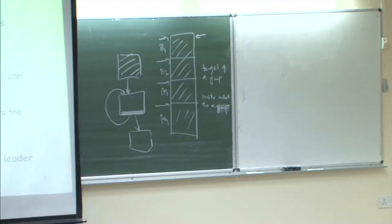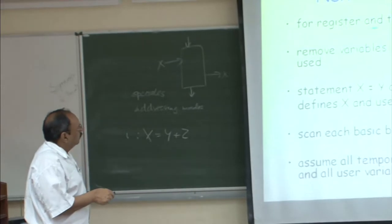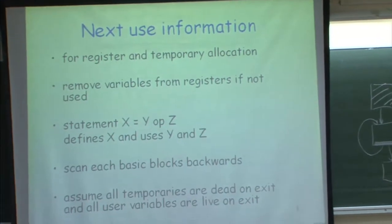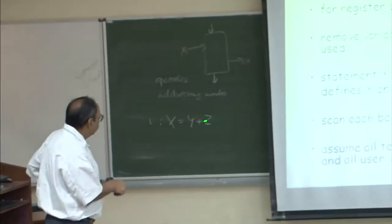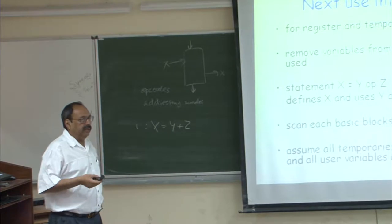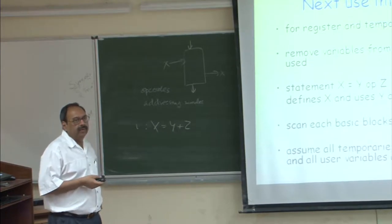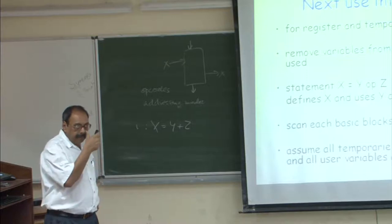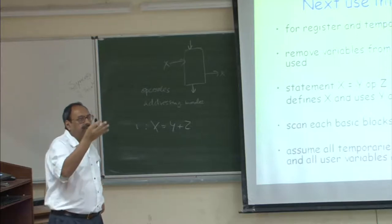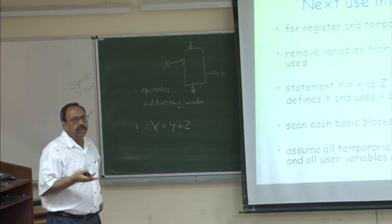We use the notation: the i-th instruction is defining variable x and using variables y and z. We want to optimize registers and temporary allocations, and remove variables from registers that are not going to be used. x, y, z could be user-defined variables or temporary variables generated by the compiler. Whenever generating three-address code, the compiler generates temporaries t1, t2, and so on — these are not user-defined variables.